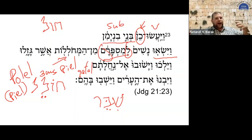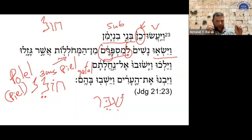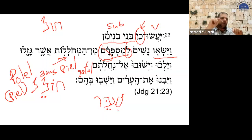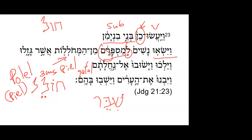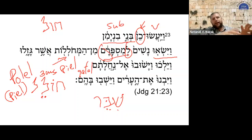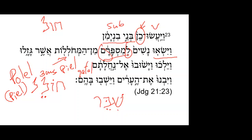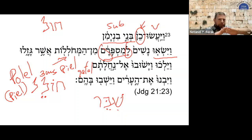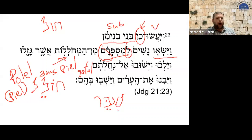Essentially between the pi'el and the polel we have complementary distribution — when you see the one, you don't see the other. There are more subtle tweaks to this situation: on a certain historical layer of biblical Hebrew, you may find a verb that takes the polel, and in the Second Temple period later you can see it takes a pi'el. But essentially these two have complementary distribution.